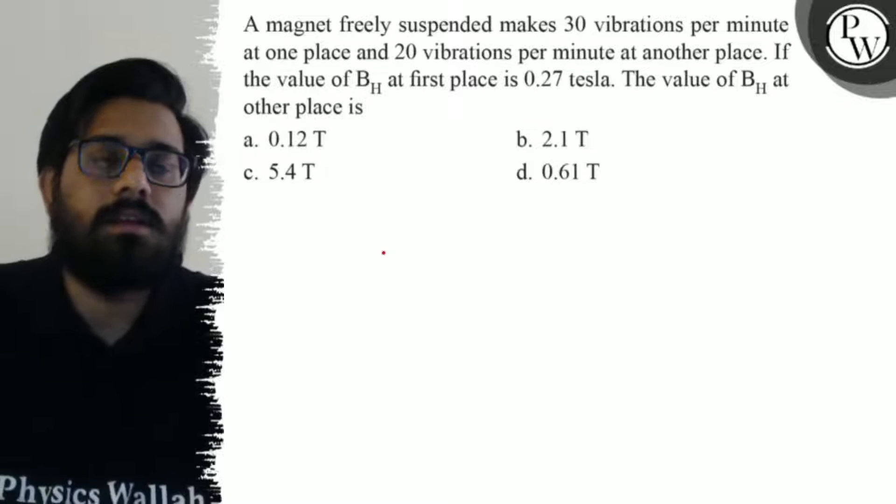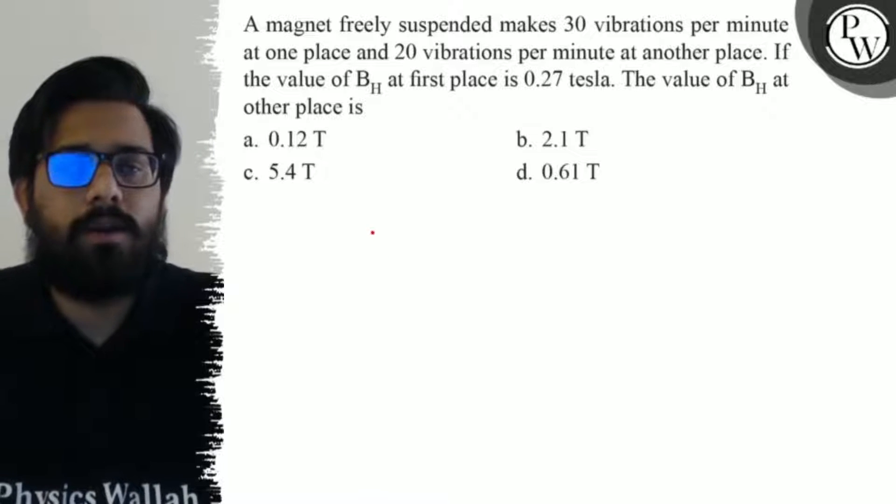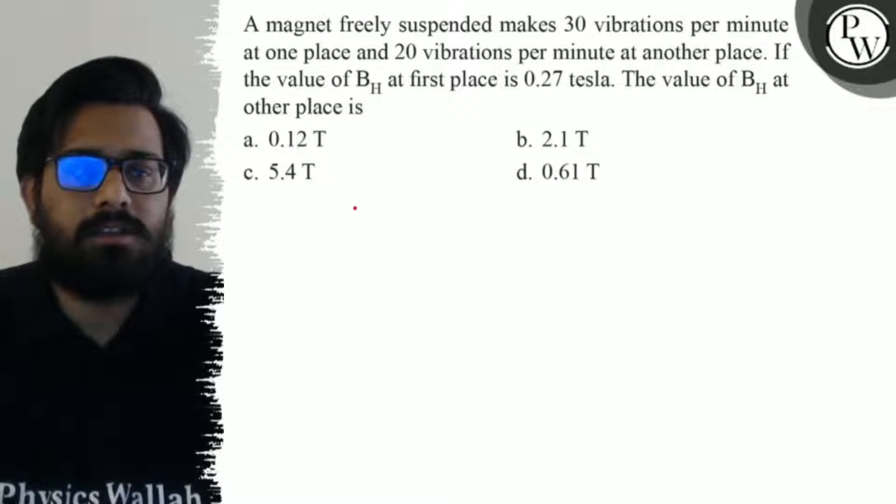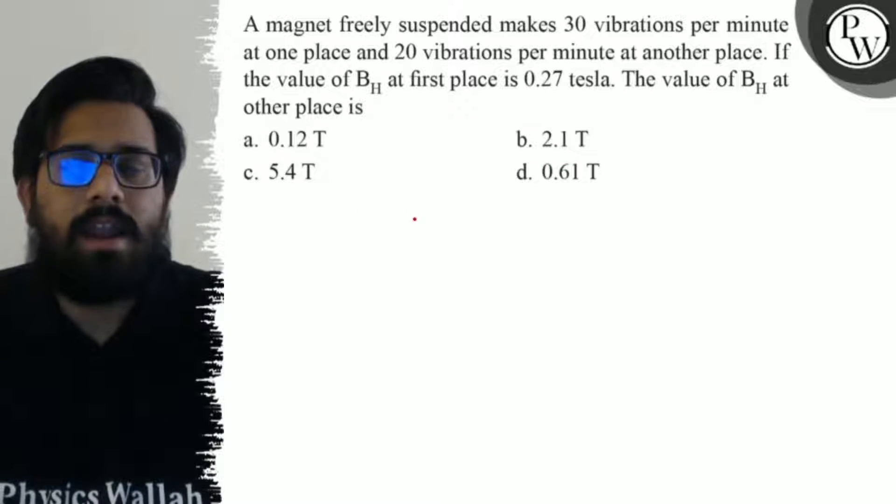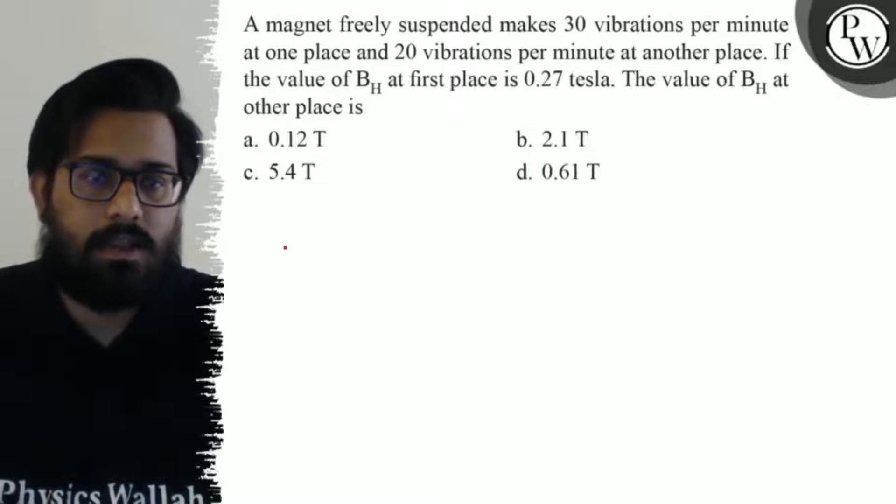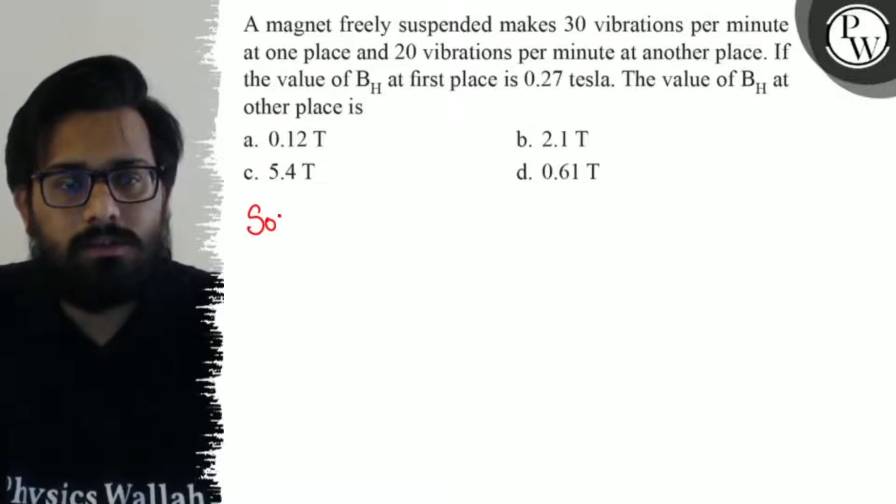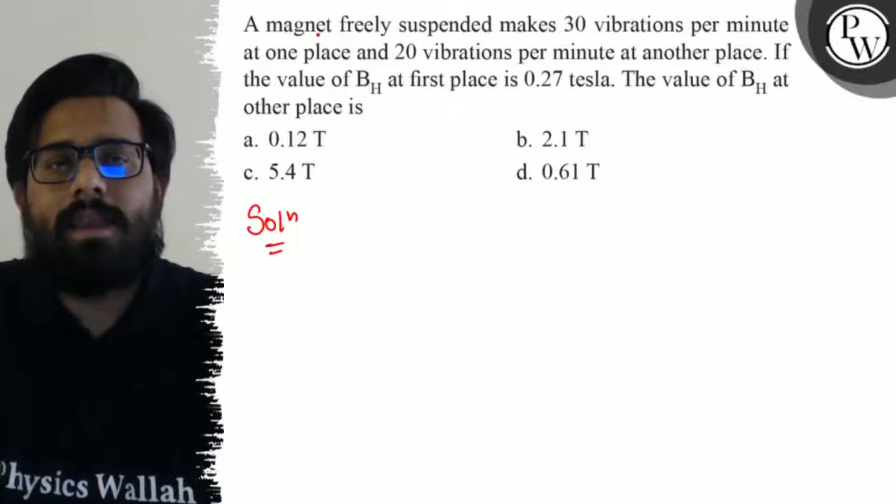...of B_H at the other place is: your first option is 0.12 tesla, your second option is 2.1 tesla, your third option is 5.4 tesla, and your fourth option says 0.61 tesla. Okay, so here in this question the magnet freely suspends, 30 vibrations per minute at one place and 20 vibrations per minute at another place.